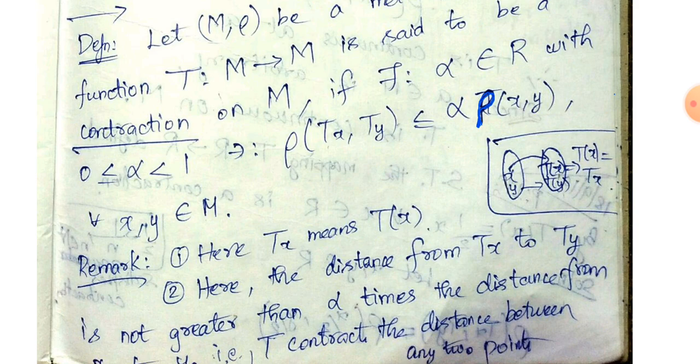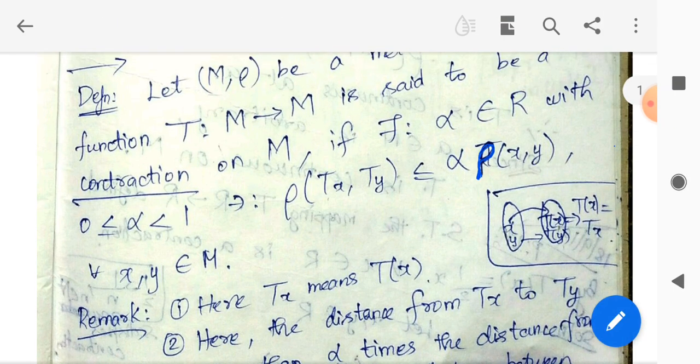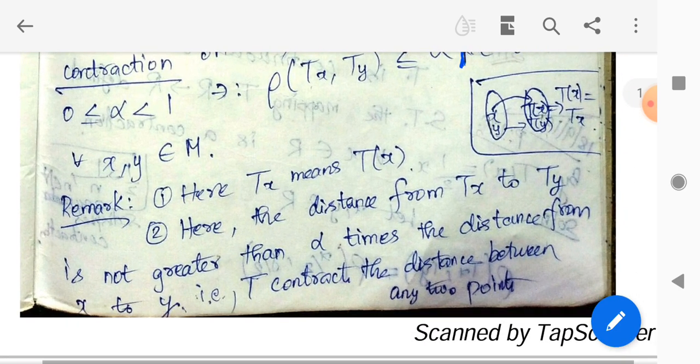x, y is the domain. T of x and T of y are in the domain. So this condition, ρ(Tx, Ty) ≤ α · ρ(x, y), is contraction — that is the definition.